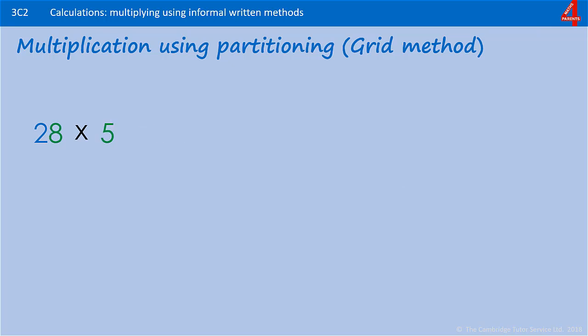Here's one for you to try. Using the grid method and your knowledge of partitioning, work out 28 multiplied by 5.